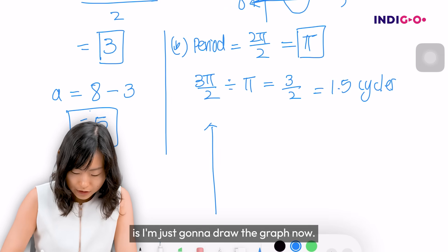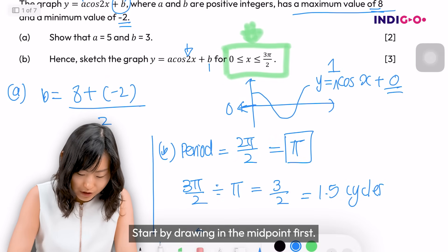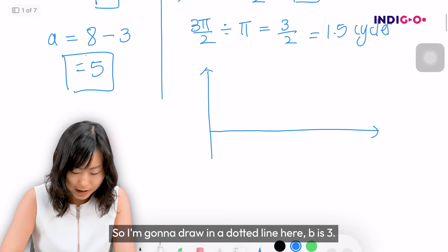Usually what I like to do is I'm just going to draw the graph now. Start by drawing the midpoint first. We had previously found that b is 3, right? So I'm going to draw in a dotted line here, b is 3.